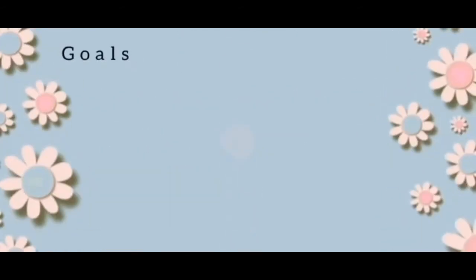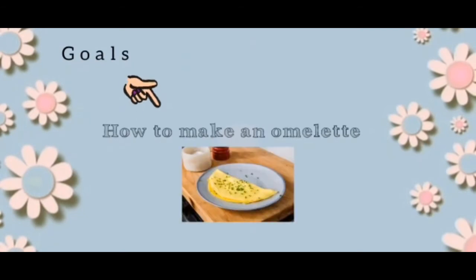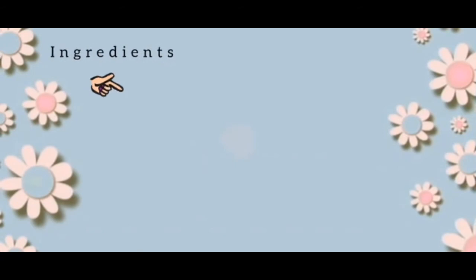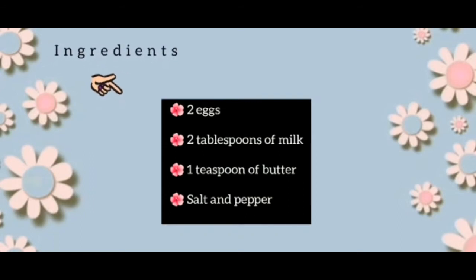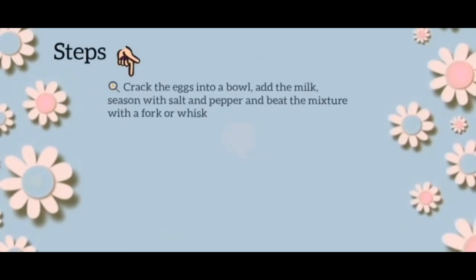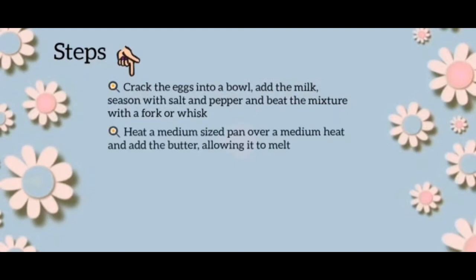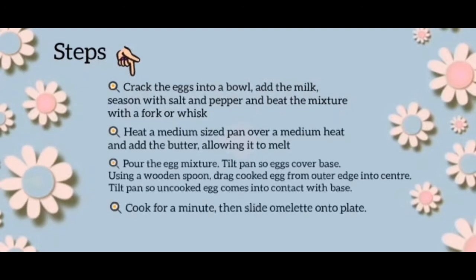Let's look at the example. Goal: how to make an omelette. The ingredients: two eggs, two tablespoons of milk, one teaspoon of butter, salt, and pepper. For the steps of making an omelette — first, you should crack the eggs into a bowl. Add the milk. Season with salt and pepper. Heat a pan, and then pour the egg mixture. Cook for a minute. Finally, serve and eat immediately.